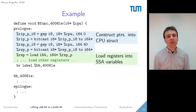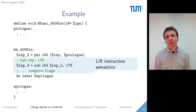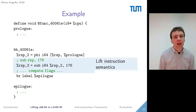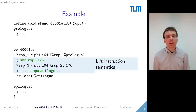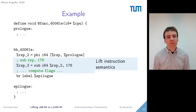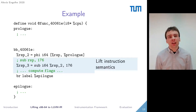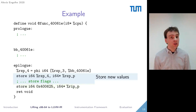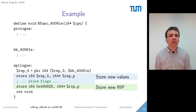We then start lifting the individual instructions. In our case, we have a single basic block for a single instruction. Here, we lift a simple subtract instruction which subtracts a constant value from the register RSP. This instruction is straightforwardly lifted to an LLVM IR subtract instruction. However, in contrast to machine code, the semantics of the status flag computations are now explicit. As we have no further instructions, we go to the epilog, where we store the values of modified registers back to the CPU struct in memory, and also store the value of the new instruction pointer.